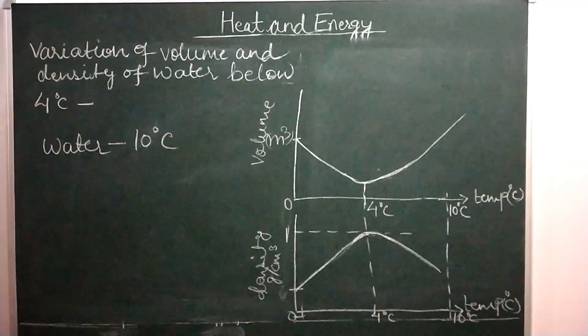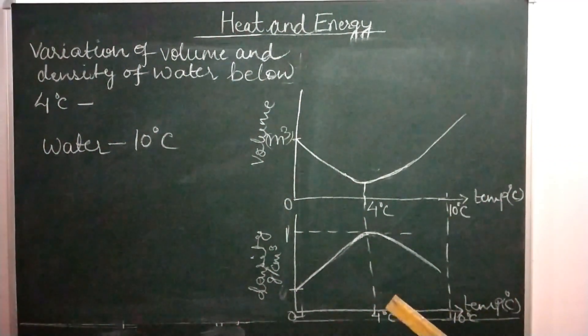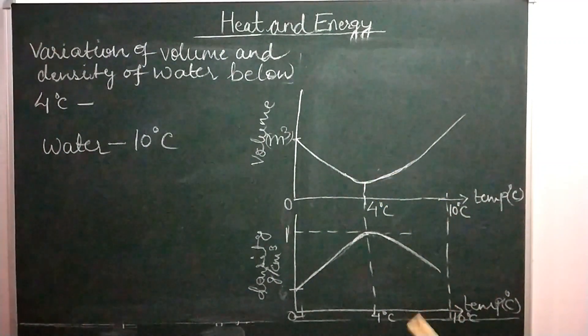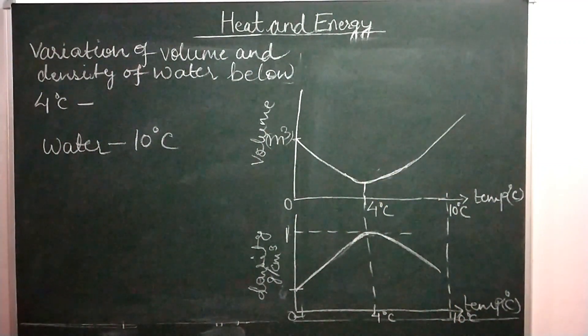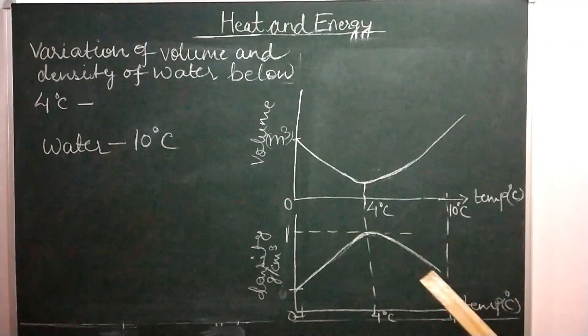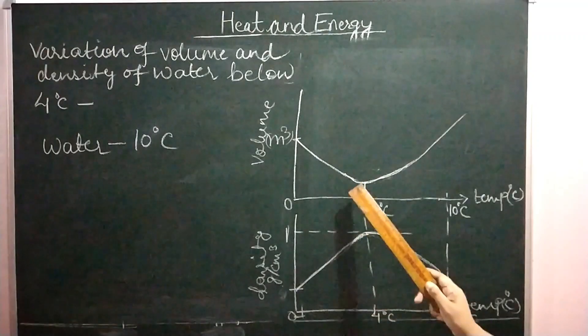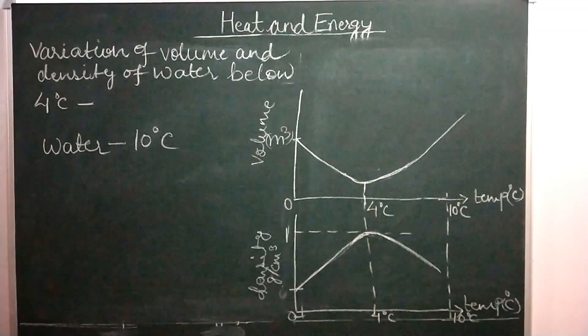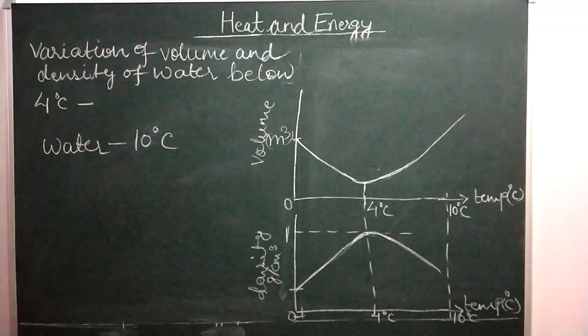So these two graphs depict the variation of volume and density of water below 4 degrees Celsius, and therefore 4 degrees Celsius is the temperature at which maximum density occurs.